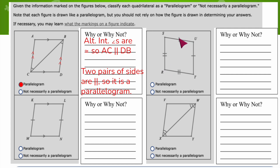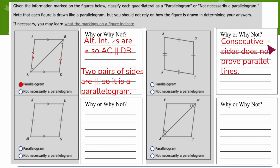In the second example, consecutive sides are congruent — the top and right side are congruent, and the bottom and left side are congruent. Consecutive congruent sides do not prove parallel lines. I don't have opposite sides congruent, and there's nothing else I can prove about this quadrilateral from this information. So it is not necessarily a parallelogram.